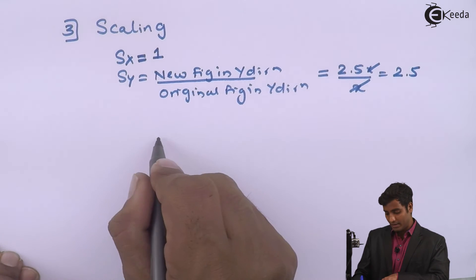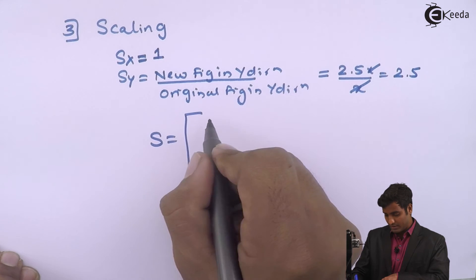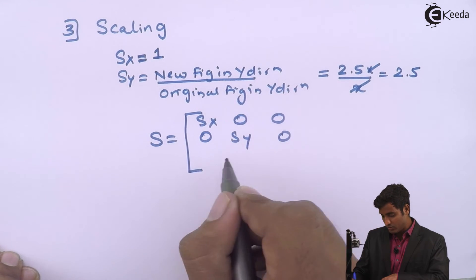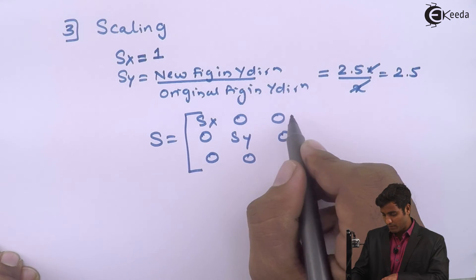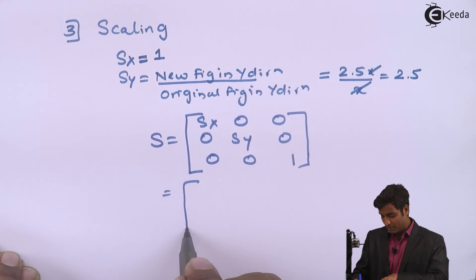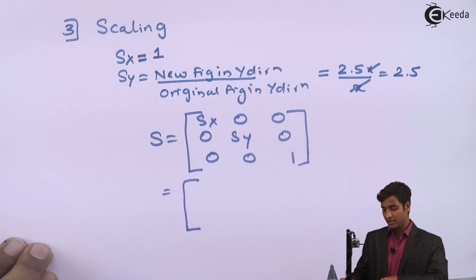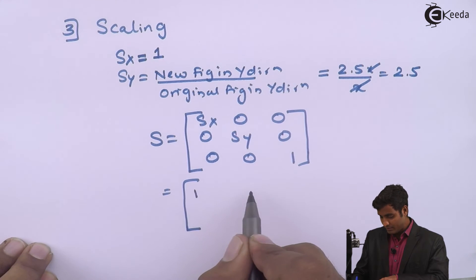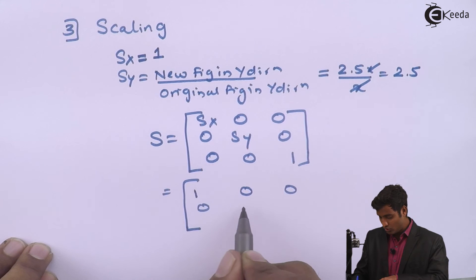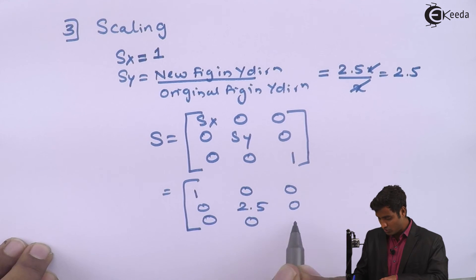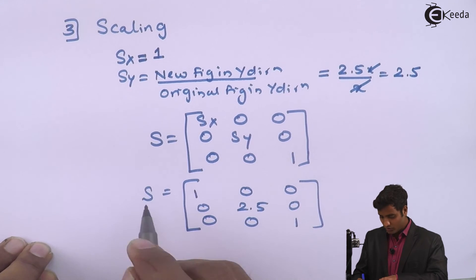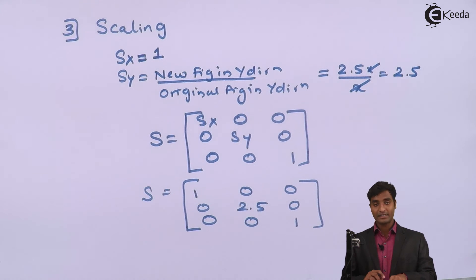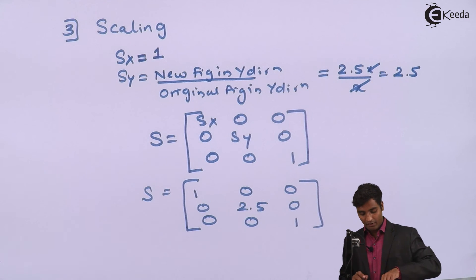The standard matrix for scaling is [Sx, 0, 0 / 0, Sy, 0 / 0, 0, 1]. Replacing the values Sx = 1 and Sy = 2.5, the corresponding matrix is [1, 0, 0 / 0, 2.5, 0 / 0, 0, 1]. After performing this scaling transformation, the figure becomes A-dash, B-dash, C-dash with the altitude increased.